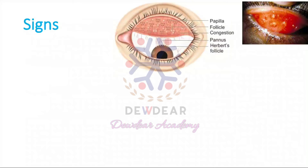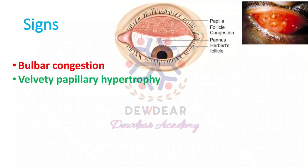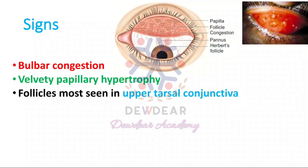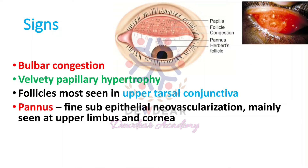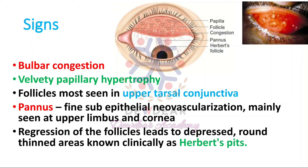The clinical signs of trachoma include: bulbar congestion; velvety papillary hypertrophy; follicles seen in the upper tarsal conjunctiva; and pannus, which is fine sub-epithelial neovascularization mainly seen at the upper limbus and cornea. Pannus is an important sign seen in trachoma.